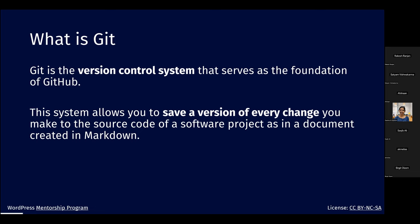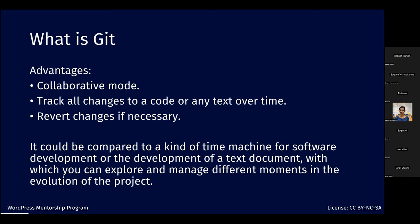Git allows collaboration because many people can work simultaneously. You can track all changes in code or text at any time. Another important thing is you can revert changes — if somebody commits code that breaks WordPress, you can go back to the last commit and revert it, then continue improving the code.